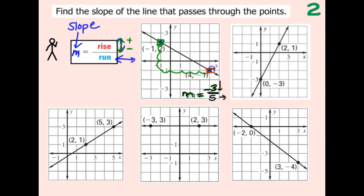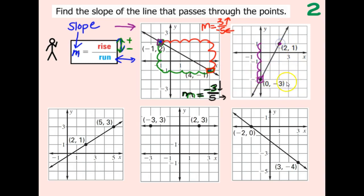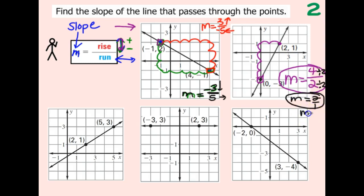If we started from the other point and went up three - that's positive - then went to the left five - negative five - we still get the same answer. It really doesn't matter which point you start from, but you have to go up or down first and then left or right second. Both directions give negative three over five - technically the same answer. I will always start on the left because that's how we read slope. So here I'm going to rise up four, that's my rise, and then run over two. That gives us four over two, which simplifies to two over one, or just two.